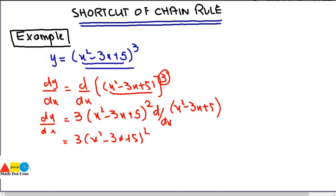The derivative of x² is 2x by the power rule, the derivative of -3x is -3, and the derivative of 5 is 0. So the final derivative is 3(x² - 3x + 5)²(2x - 3). This is just two steps — much quicker than the chain rule, which requires substitution and is time-consuming.